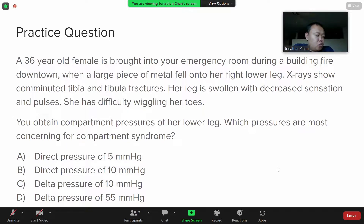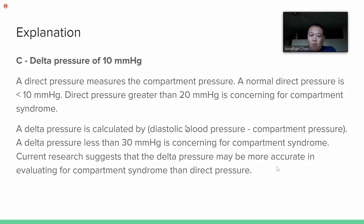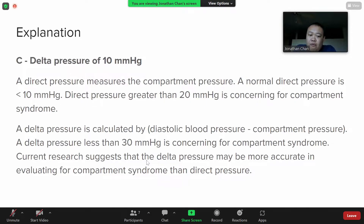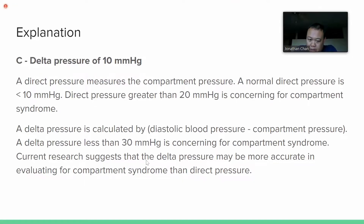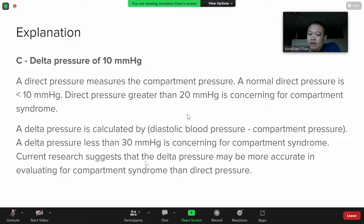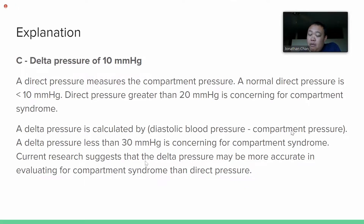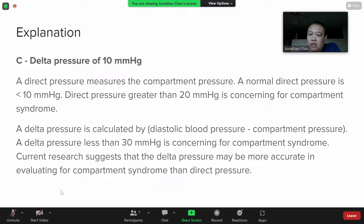Options A and B show direct pressures of 5 and 10, both well under 20, so not concerning for compartment syndrome. The delta pressure is a different measurement: you take the diastolic blood pressure and subtract the compartment pressure. For delta pressure, if it's less than 30, we are worried about compartment syndrome — because if diastolic is around 80 and the delta is under 30, the compartment pressure would be about 50 or higher. The delta pressure is currently considered more accurate than direct pressure.